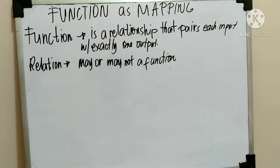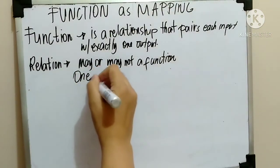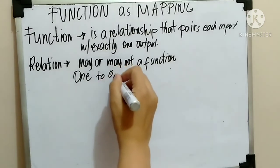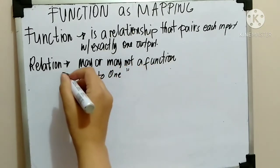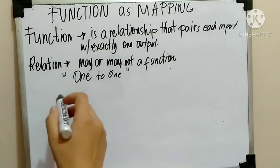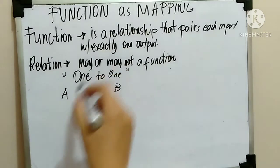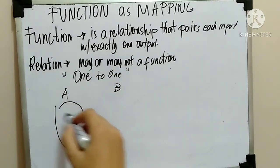Now, about the classification of correspondence, we have three. So, the first one is one to one. Okay, for example, si A and B.